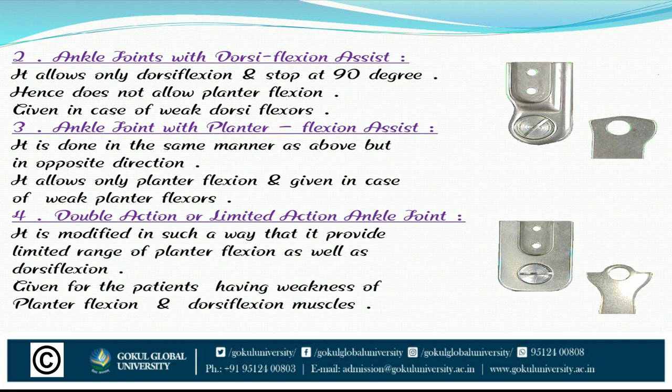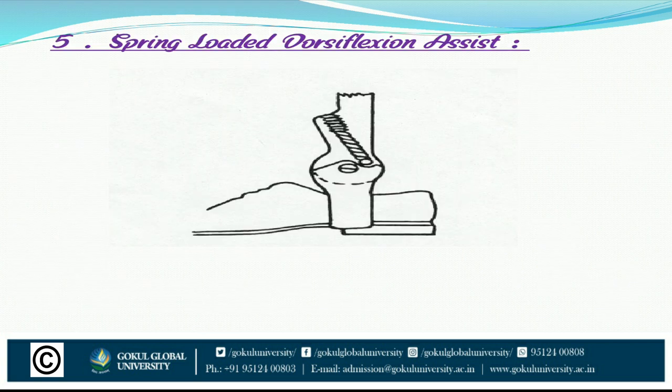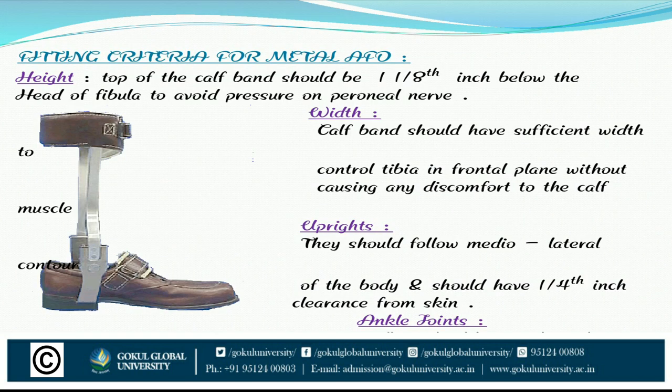To summarize: ankle joint with dorsiflexion assist is for weakness of dorsiflexion; ankle joint with plantarflexion assist is for weakness of plantarflexion; double action or limited action ankle joint is for weakness of both plantarflexion and dorsiflexion. There is also a spring-loaded dorsiflexion assistant.